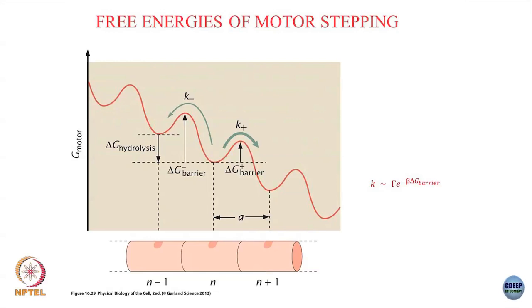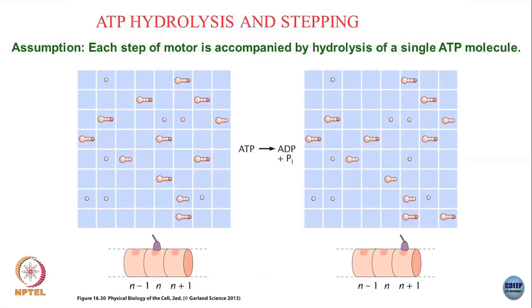Tau is something like the frequency with which you attempt these barrier crossing moves. To couple this to hydrolysis, I go back to the lattice picture at a very zeroth-order level. My assumption is that every step of the motor is accompanied by hydrolysis of a single ATP molecule.